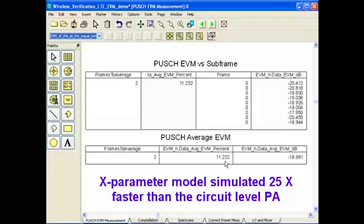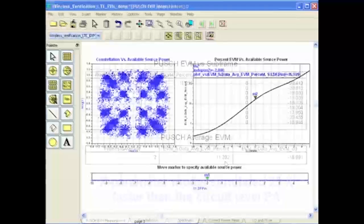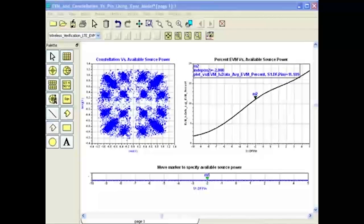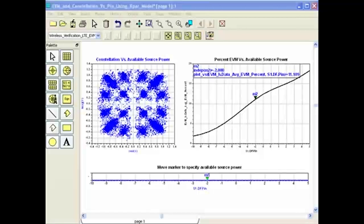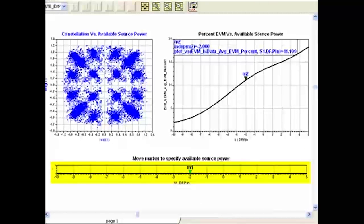This allows system integrators to perform various trade-off and what-if analysis very effectively. For example, because it is much faster to simulate using the X parameter model, I was able to quickly simulate and generate this EVM plot at 16 different input power points from minus 10 to plus 5 dBm.